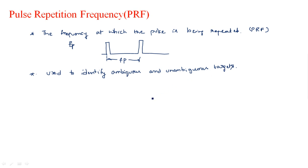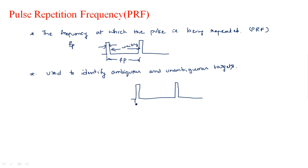We are giving a very short pulse width — that means we are transmitting a signal for only a short time period and then waiting for the echo signals for a long period. This waiting period is for receiving echo signals. I am explaining in terms of time period. This is the pulse width PW that I have transmitted, and I am waiting for this much time for the echo signals.